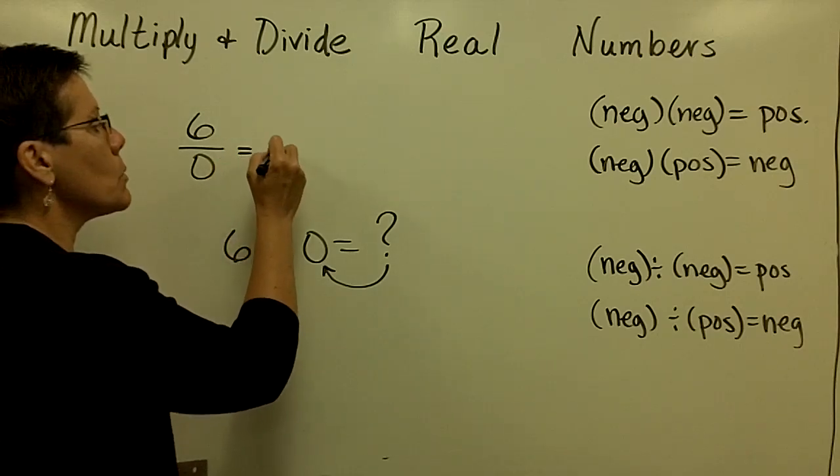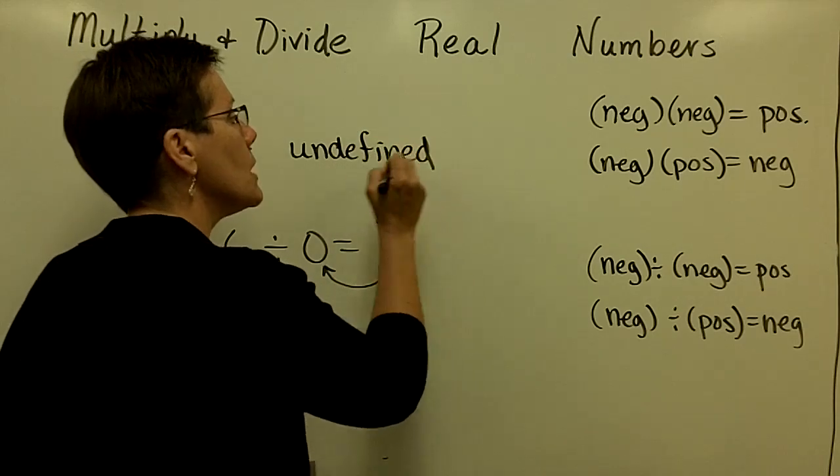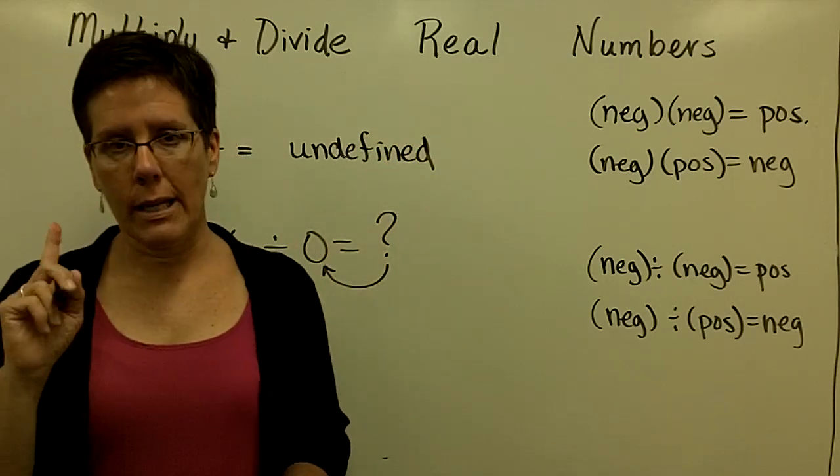And so we say that when we divide by 0, that it is an undefined expression. Dividing by 0, I cannot do, and I need you to tell me that that is undefined.